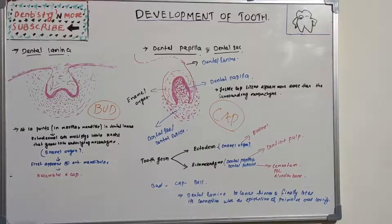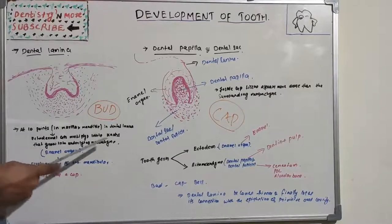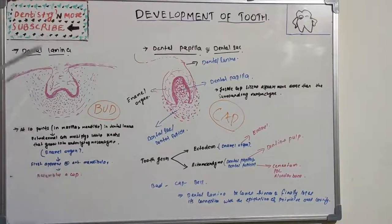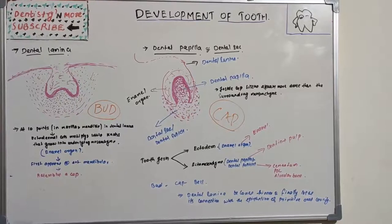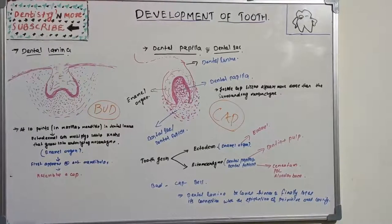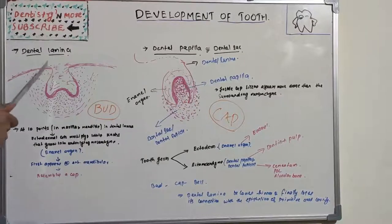There will be rapid multiplication of ectodermal cells, resulting in a knob-like structure formation which grows into the underlying mesenchyme. It becomes the enamel organ, also known as the bud stage — this is the first stage.